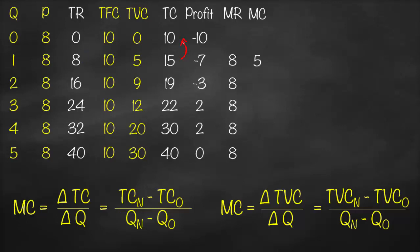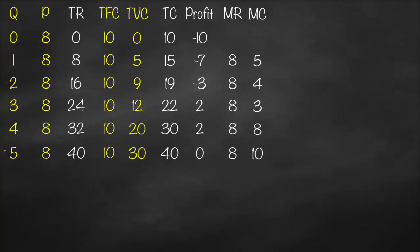Marginal cost calculations: for Q1: (15−10)/(1−0)=5; for Q2: (19−15)/(2−1)=4; for Q3: (22−19)/(3−2)=3; for Q4: (30−22)/(4−3)=8; for Q5: (40−30)/(5−4)=10.